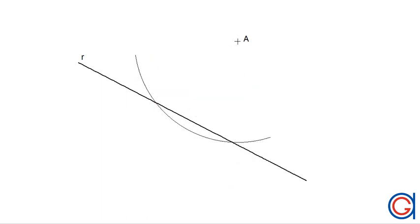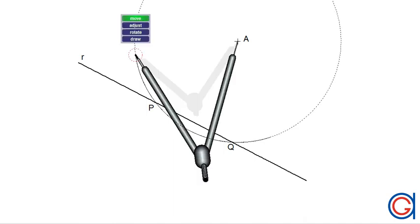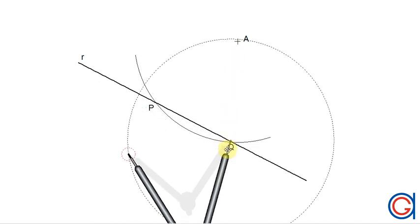The first step is setting our compass on the given point A with a radius long enough to cut the line. We scribe an arc that cuts our given line R at two points, which we will call P and Q.